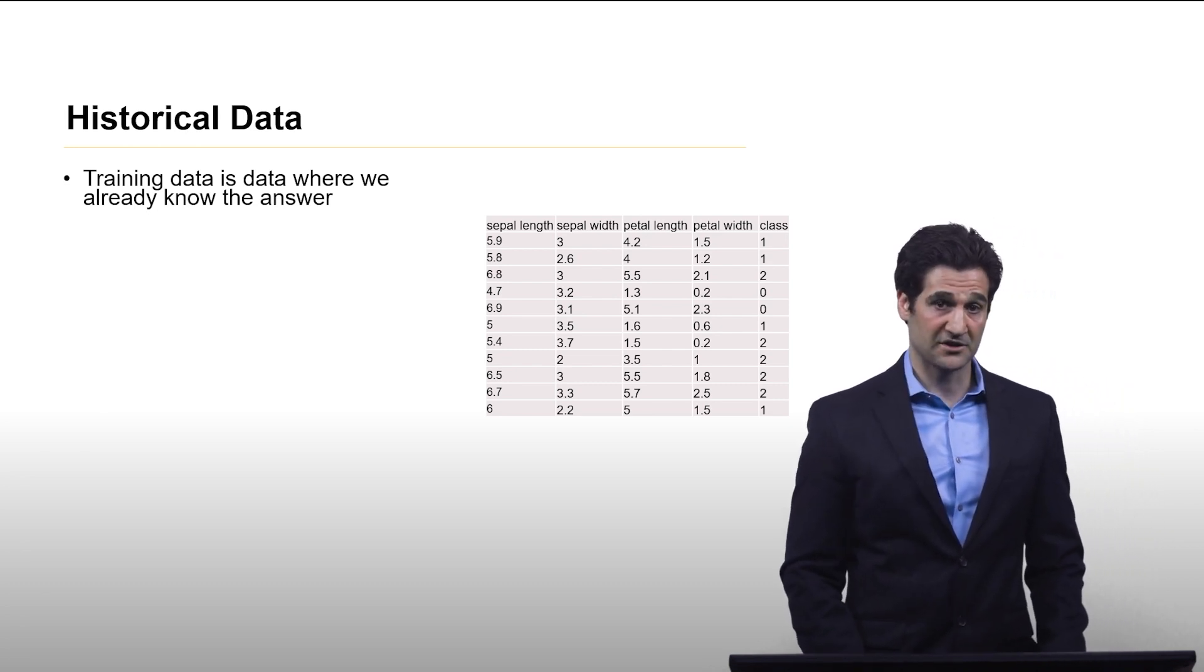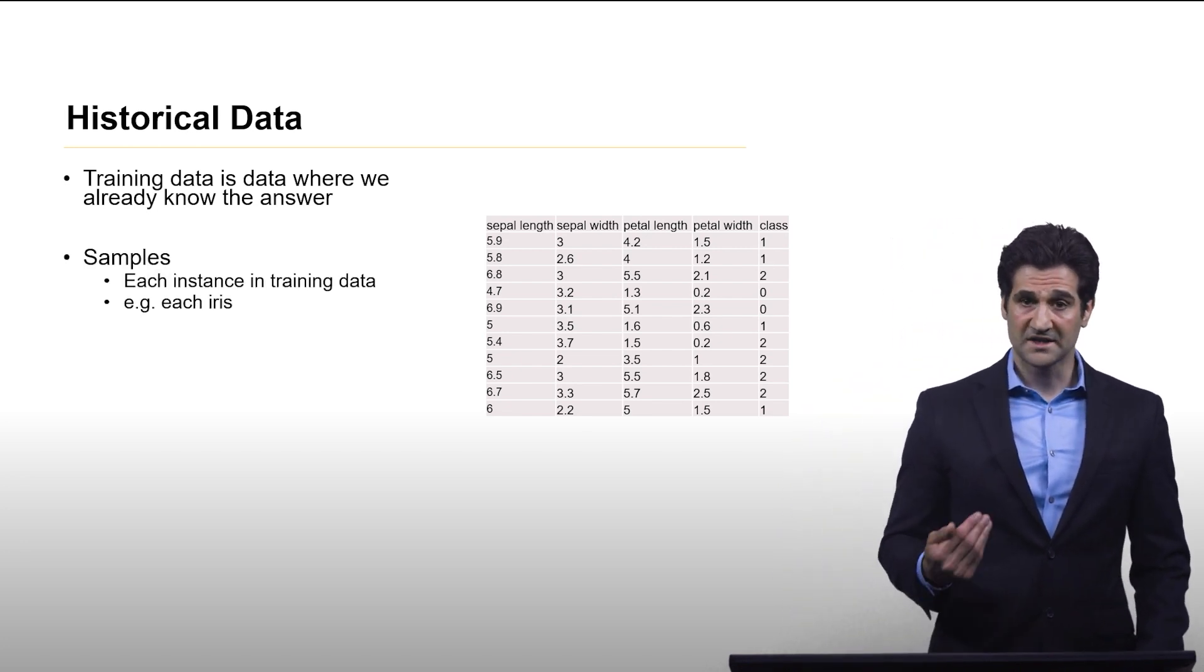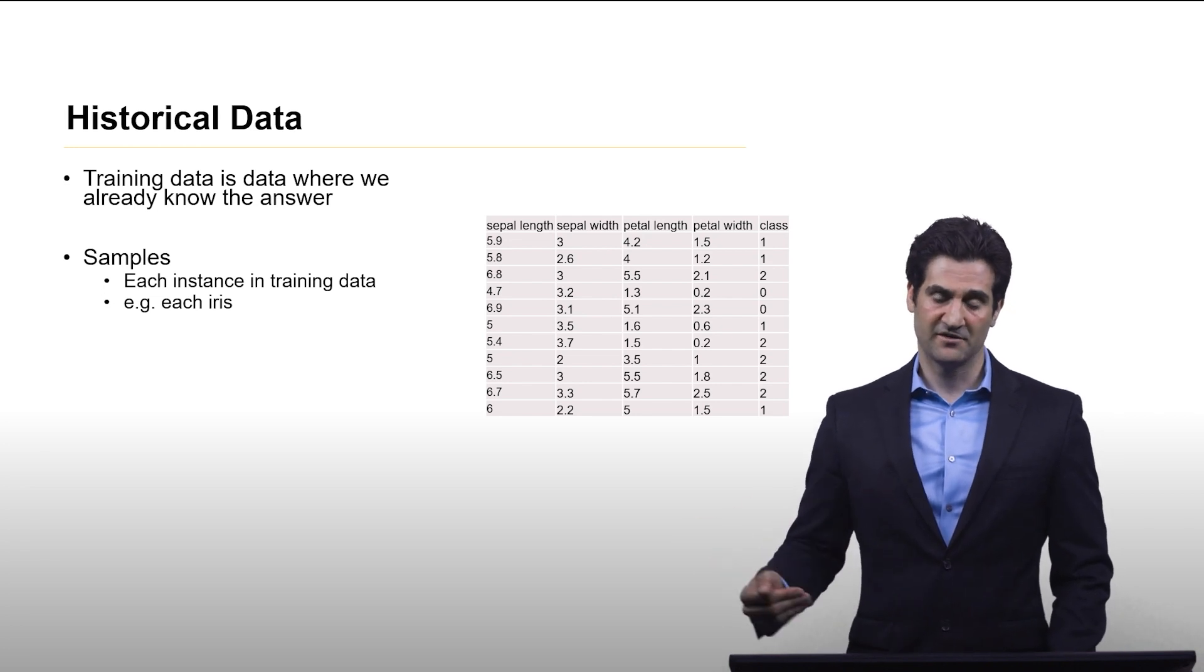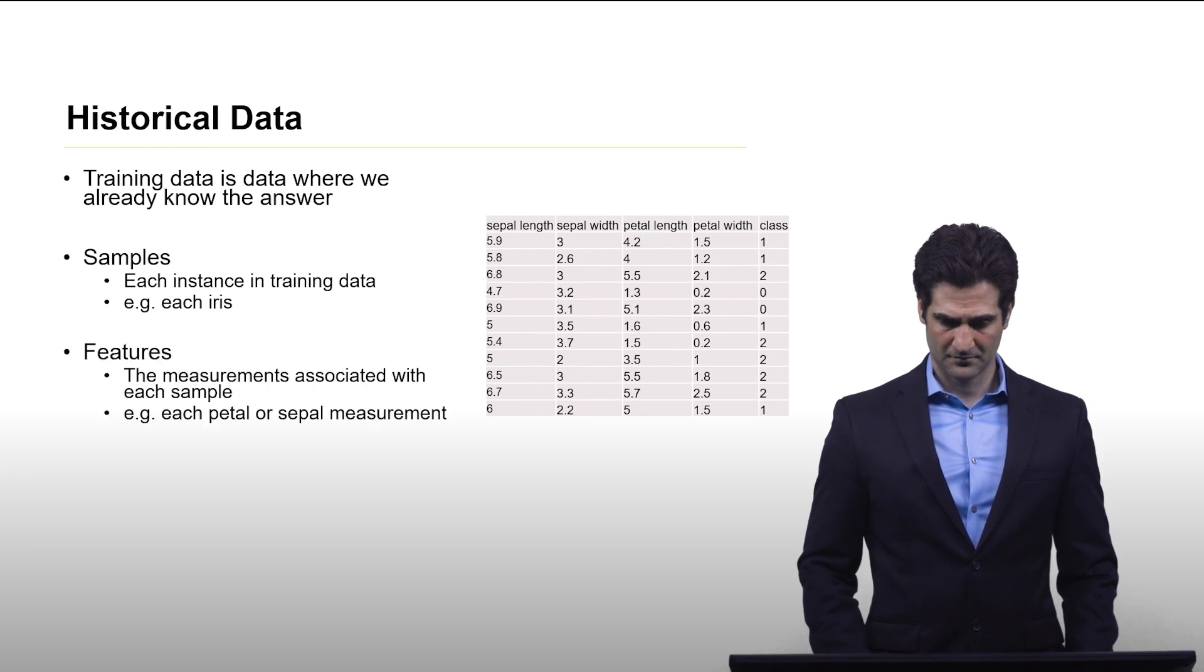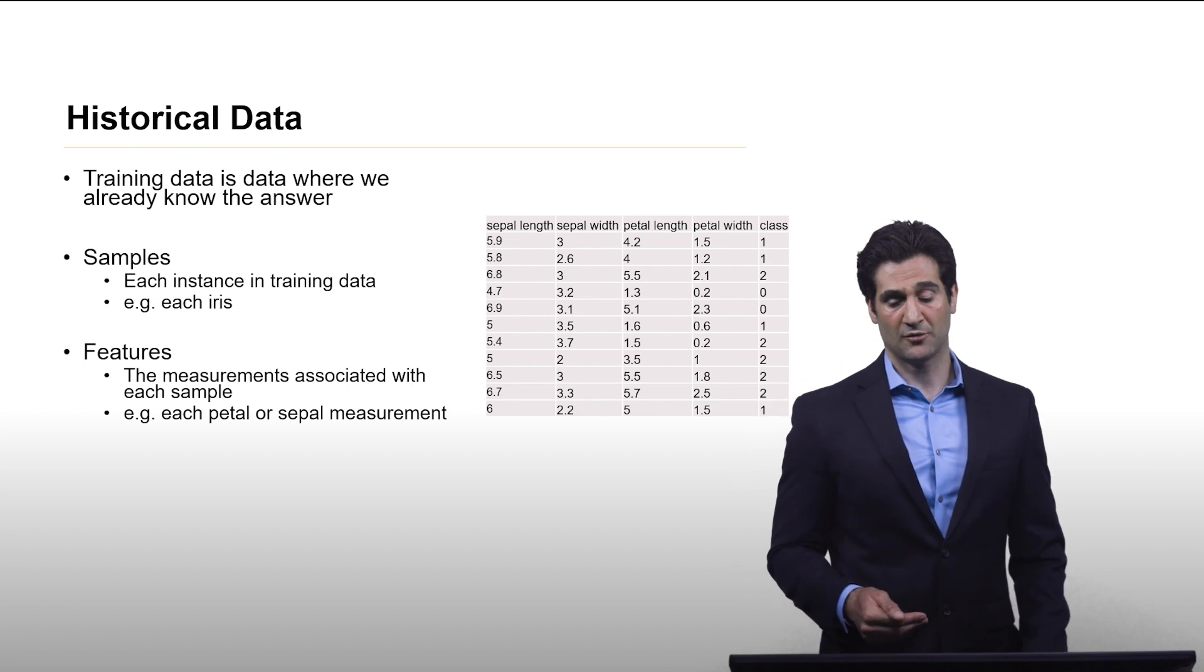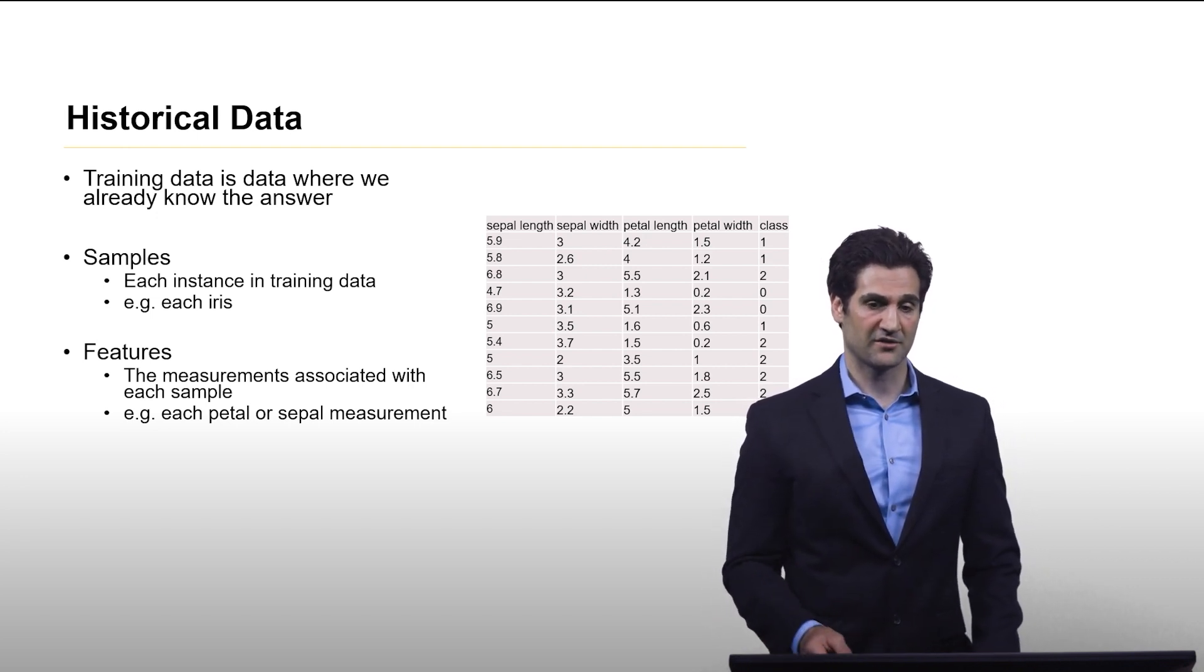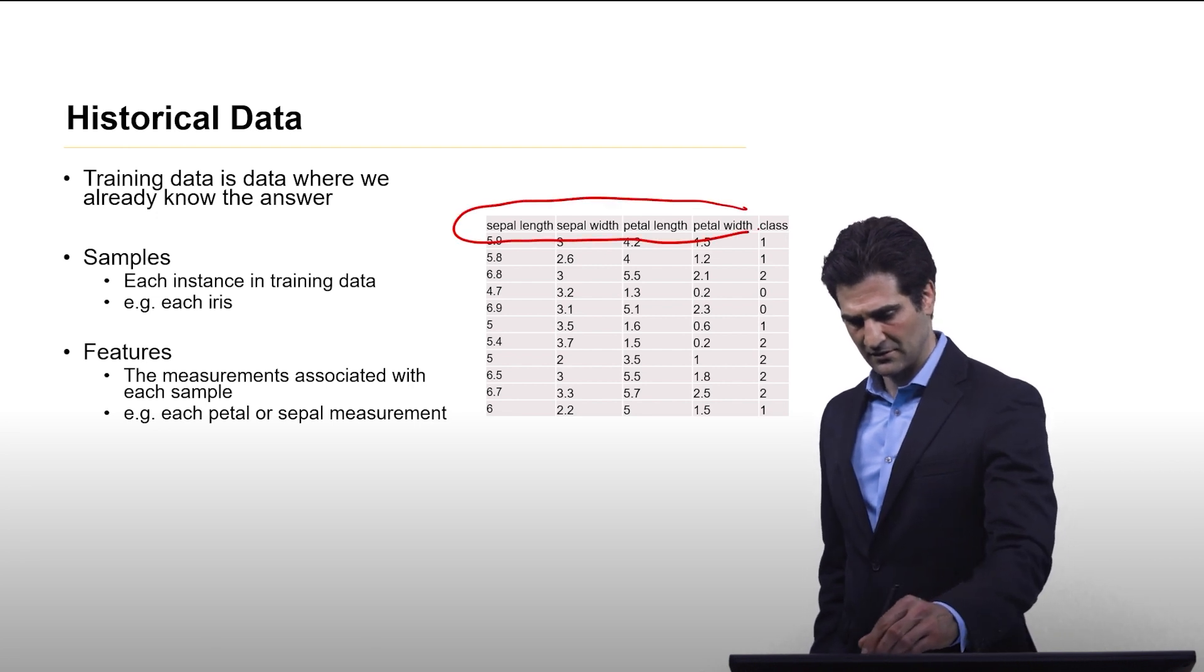Let's talk about this in some machine learning terms. A sample is just each row in the historical data. Each iris that we have previously gotten these measurements and identified what type of species it is, that is a sample. The features are the measurements associated with each sample, the columns. Here we have sepal length, sepal width, petal length, and petal width. Those are the features.